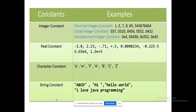Real constants mean working with a fraction part or scientific notation. For example: -2.0, -2.15, -0.71, +0.5, 0.40234, -0.22. Capital E or small e is used based on the notation. These all come under real constants. Character constants are only characters — small a to z or capital A to Z — they will not change. Even special characters can be embedded. String constants are represented within double quotes — that's the main difference between character and string.